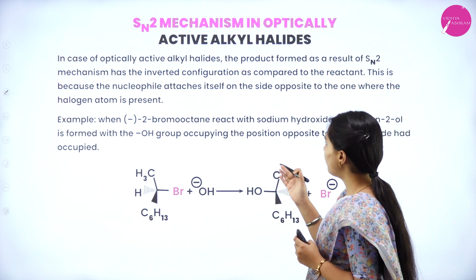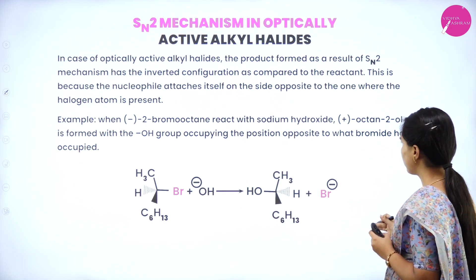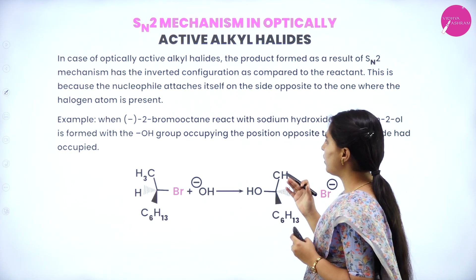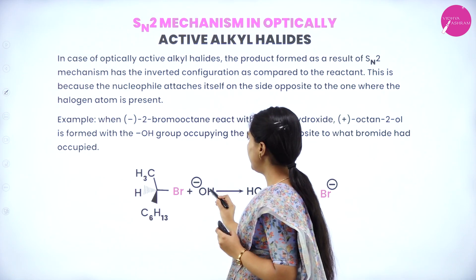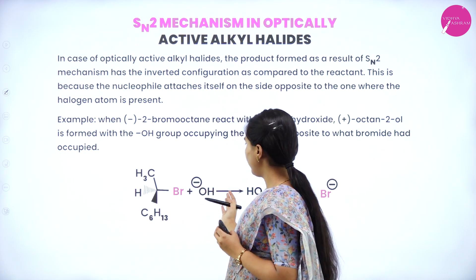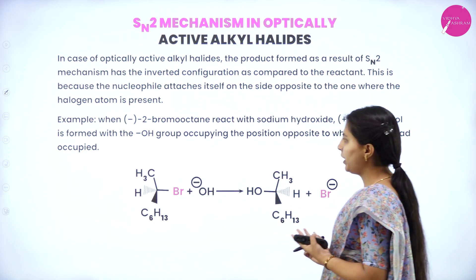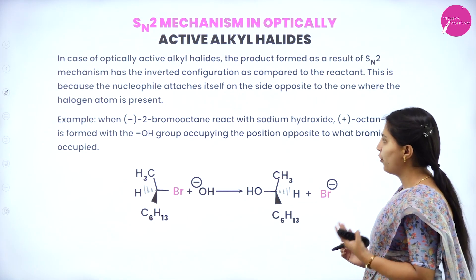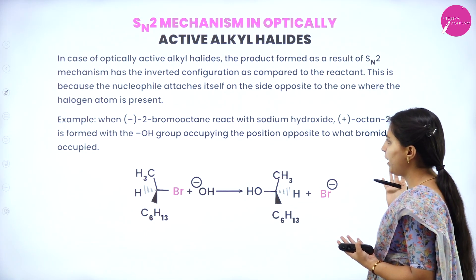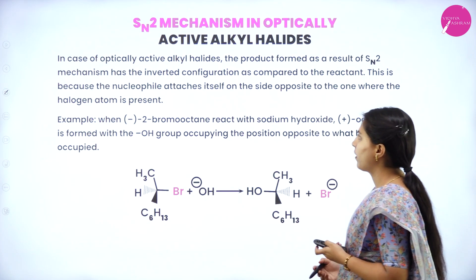When 2-bromooctane reacts with sodium hydroxide, 2-octanol is formed with the OH group occupying the position opposite to where the bromide was — the nucleophile OH comes in opposite to bromine.